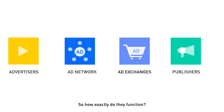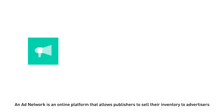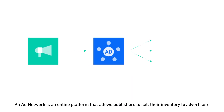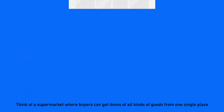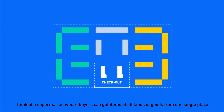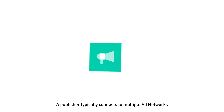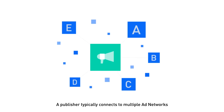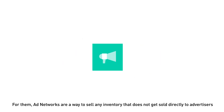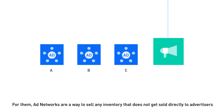So, how exactly do they function? An ad network is an online platform that allows publishers to sell their inventory to advertisers. Think of a supermarket where buyers can get items of all kinds of goods from one single place. A publisher typically connects to multiple ad networks. For them, ad networks are a way to sell any inventory that does not get sold directly to advertisers.